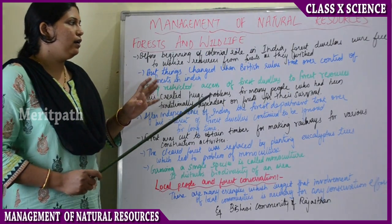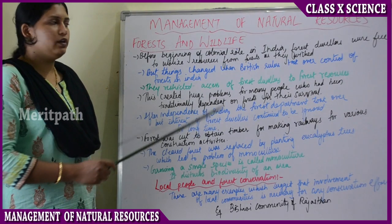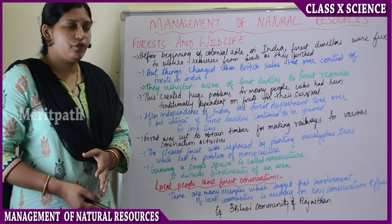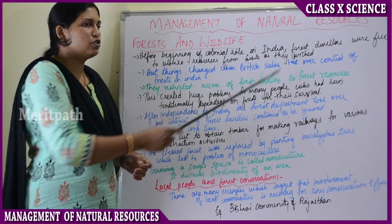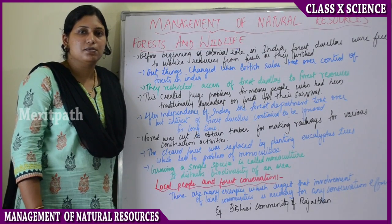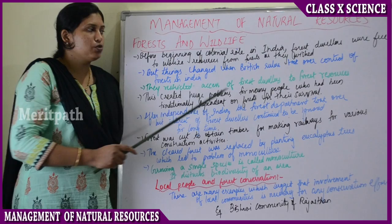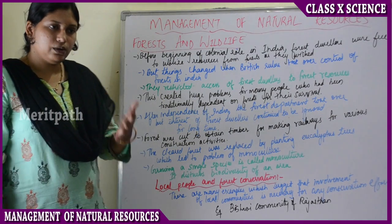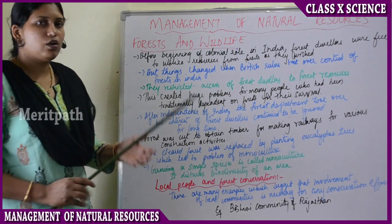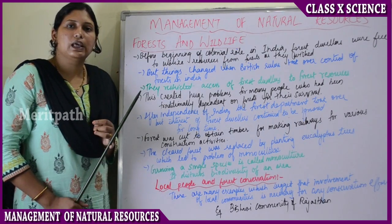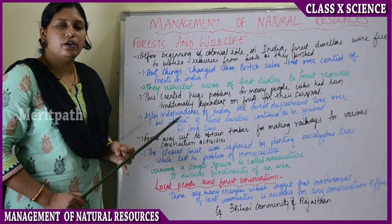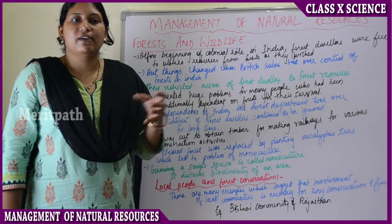Before the beginning of British colonial rule in India, forest dwellers were free to utilize resources from the forest as they wished. But when the British took control of forests in India, things changed — they restricted the access of forest dwellers to forest resources. This created a huge problem for many people who had been traditionally dependent on forests for their survival.